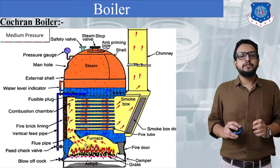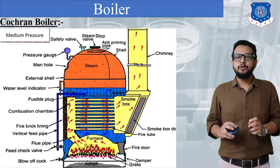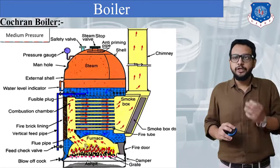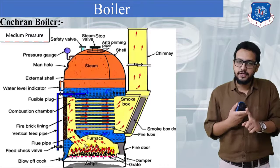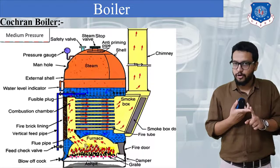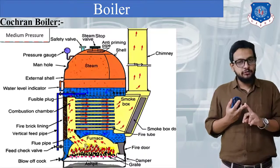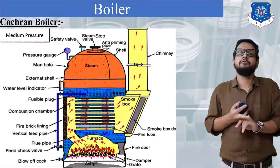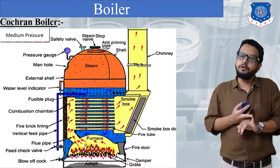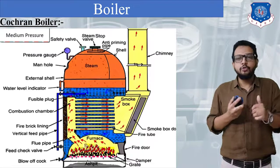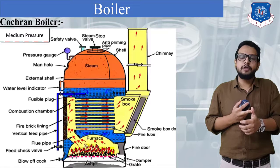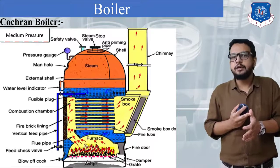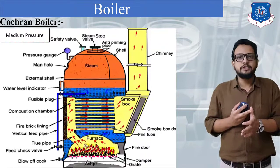You can see the diagram of the boiler displayed on the screen. In each and every boiler we have to mention four things: first is characteristics of a boiler, second is specification of a boiler, third is construction of a boiler, and fourth is working of a boiler. Now talking about characteristics of a boiler, we have to mention all the classifications which we have studied in our last session with respect to this Cochran boiler.